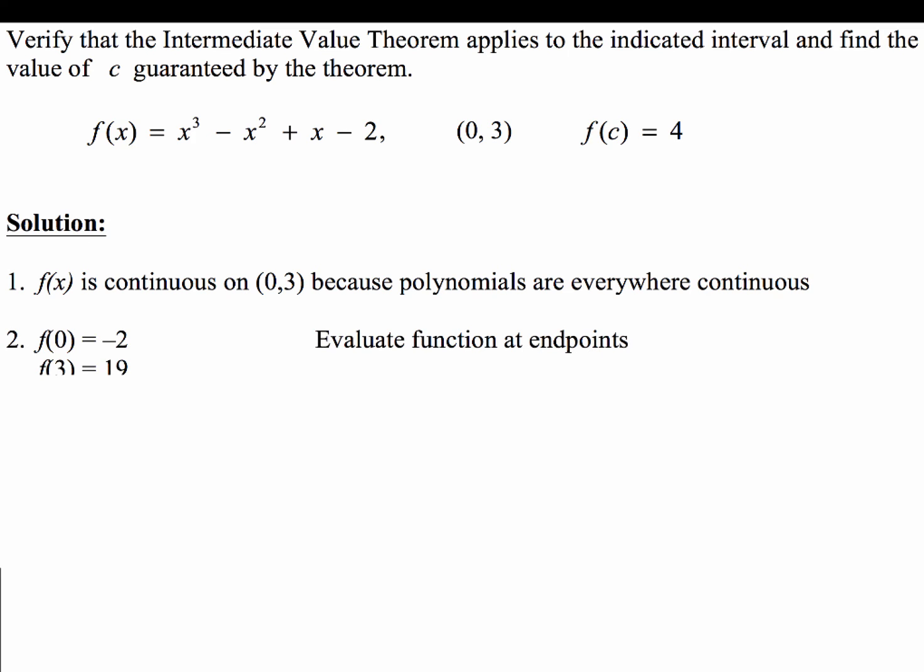The second step is to evaluate the function at the endpoints. In this case, we have the two x values 0 and 3. So what we do is we plug 0 into f(x) and we come up with a value of -2, and we plug in 3 to f(x), and when we do that, we get a value of 19.